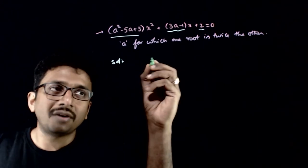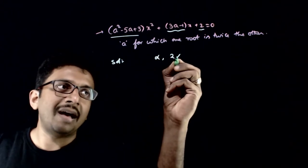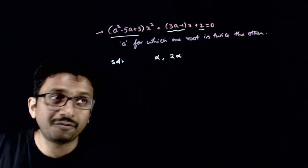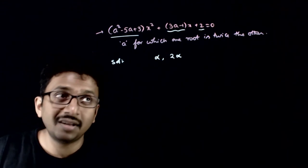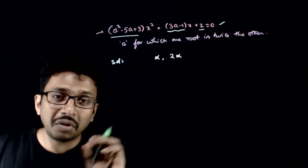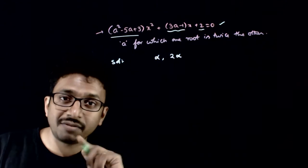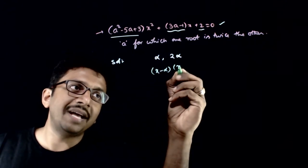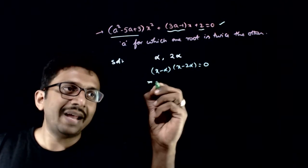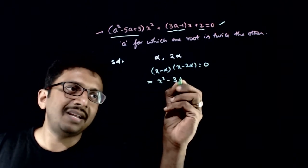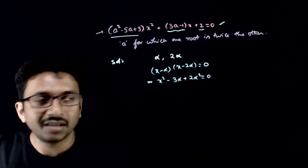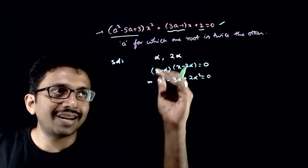That means the roots of the equation should be of the form alpha, 2·alpha. So what is the quadratic equation whose roots are alpha and 2·alpha? It is (x - alpha)(x - 2·alpha) = 0, which implies x² - 3·alpha·x + 2·alpha² = 0. This is the equation whose roots are alpha and 2·alpha.